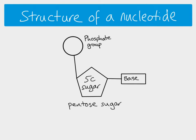The nitrogenous bases are cytosine, thymine, uracil, adenine, and guanine — C, G, A, T, and U. So this is our nucleotide, the monomer for our nucleic acids.